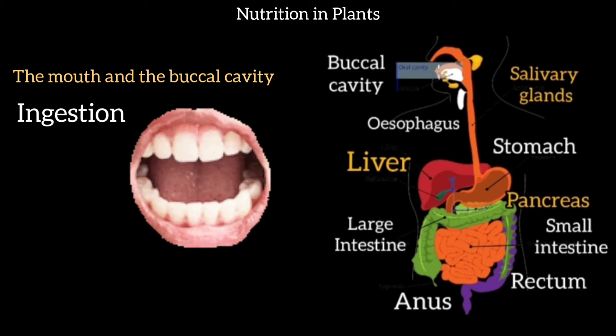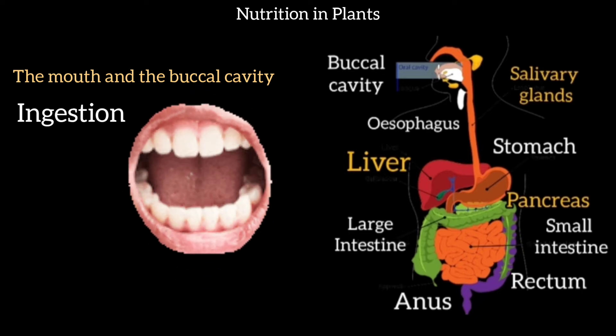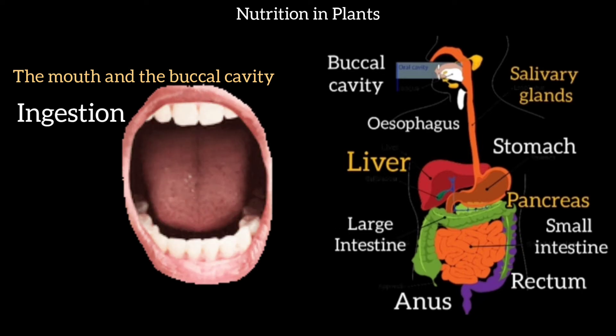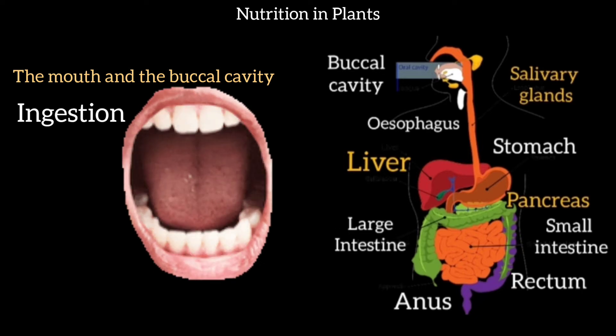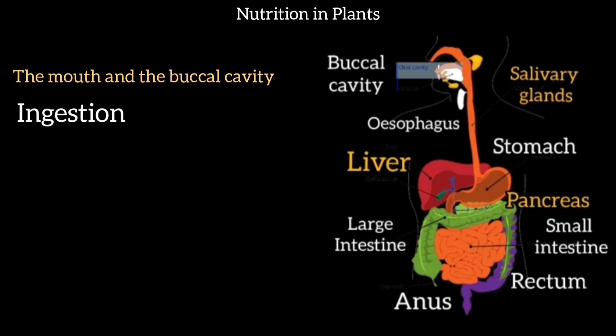Our mouth has teeth and a tongue. In the buccal cavity, we chew the food using our teeth and divide it into small and smaller parts.